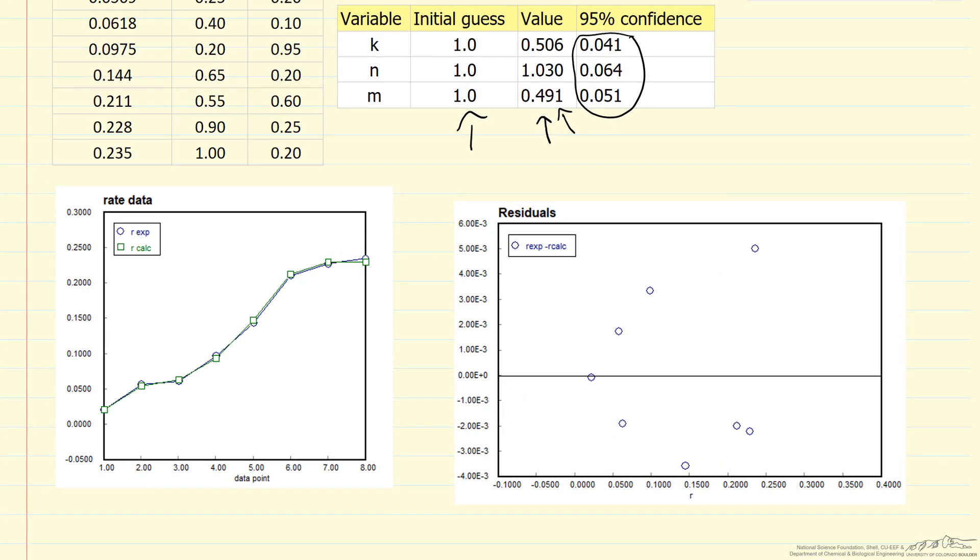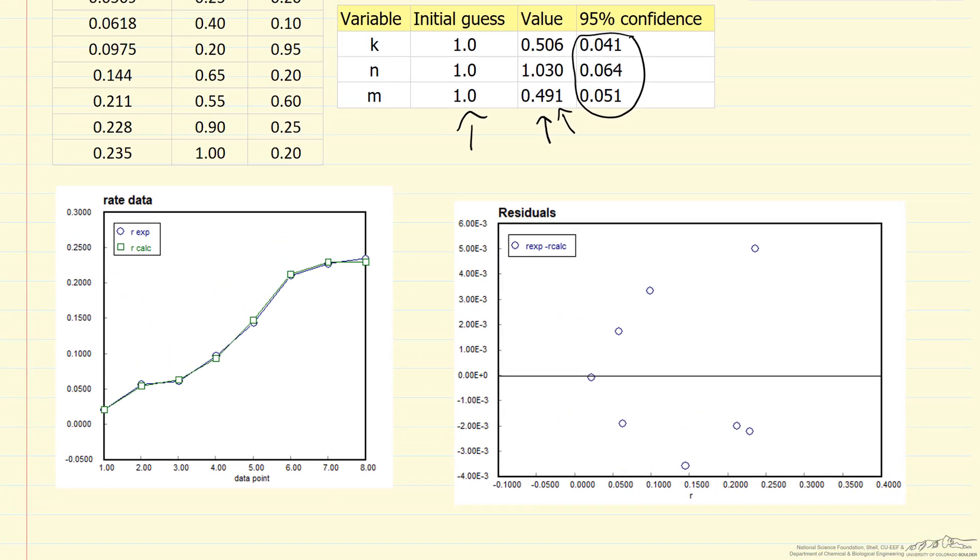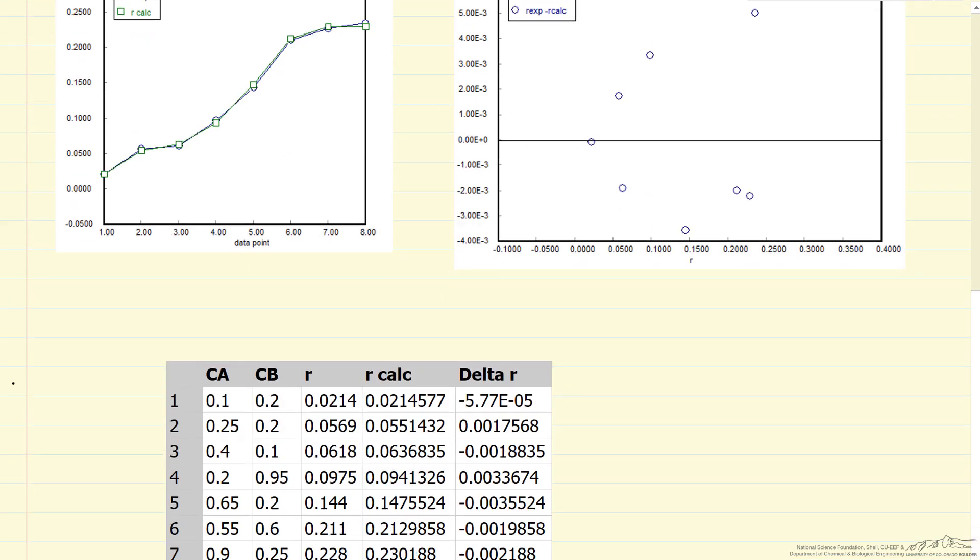And then we can look at that difference. In this case, the plot is a function of rate. The question is, does this look like a random distribution? It approximately looks random. One way to check is the run number, so let's talk about what that is.